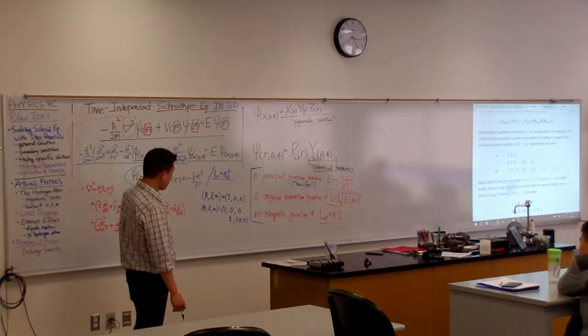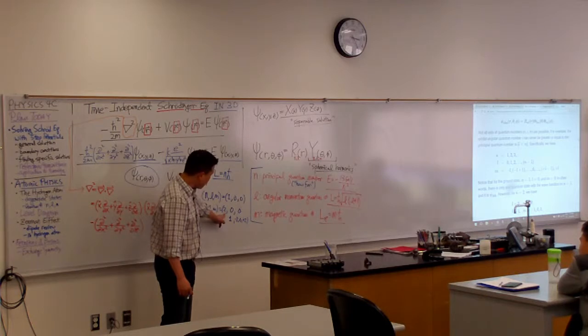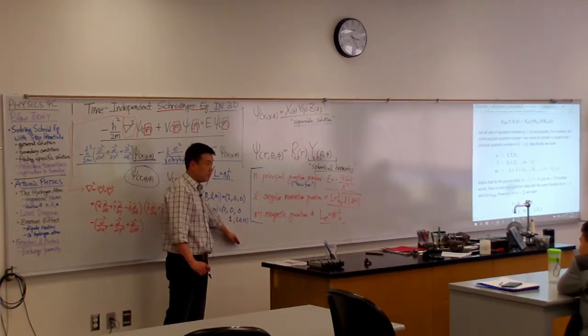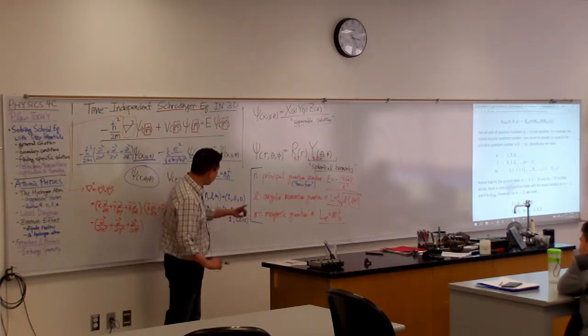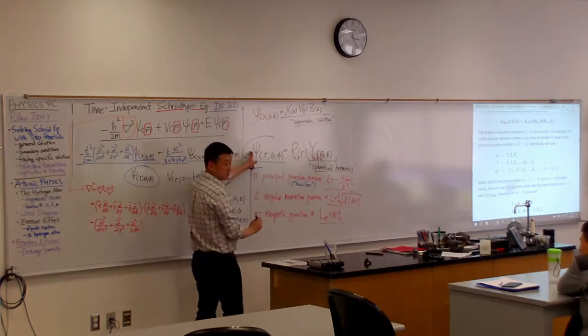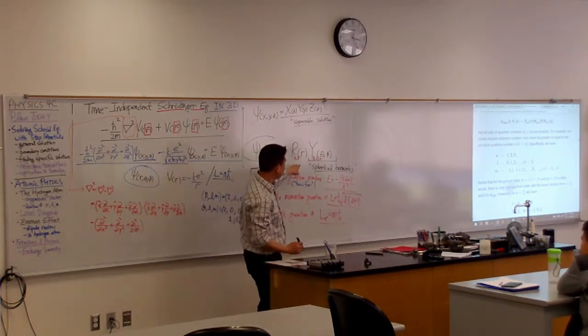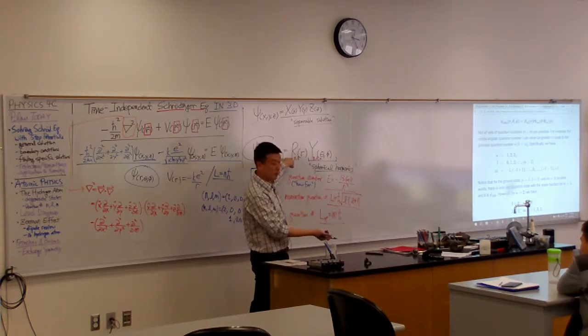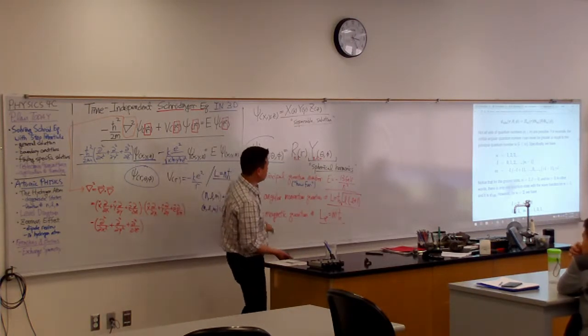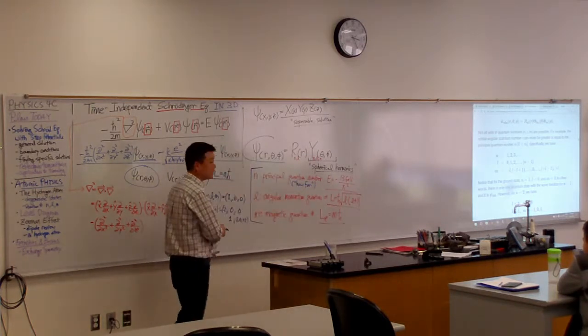In other words, once you have N equals two, then there are total of four distinct states that you can solve for. And what we mean by four distinct states are four distinct wave functions. Different value of L corresponds to different radial wave function. And different value of M corresponds to different spherical harmonics.